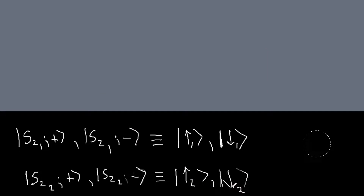At this point we've developed pretty much all the tools we need to solve any problem involving a single spin-1/2 particle in a magnetic field. So now I want to look at the next most complicated problem, which is two spin-1/2 particles. In this video we're just going to look at how to describe this system.